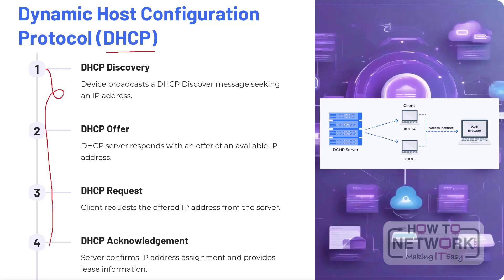The DHCP process follows four steps. First, DHCP Discovery: a device broadcasts a DHCP discovery message seeking an IP address from available DHCP servers. Second, DHCP Offer: the DHCP server responds with an offer of an available IP address and configuration parameters. Third, DHCP Request: the client requests the offered IP address from the server, confirming its intention to use the provided configuration. Fourth, DHCP Acknowledgement: the server confirms IP address assignment and provides lease information, completing the configuration process.